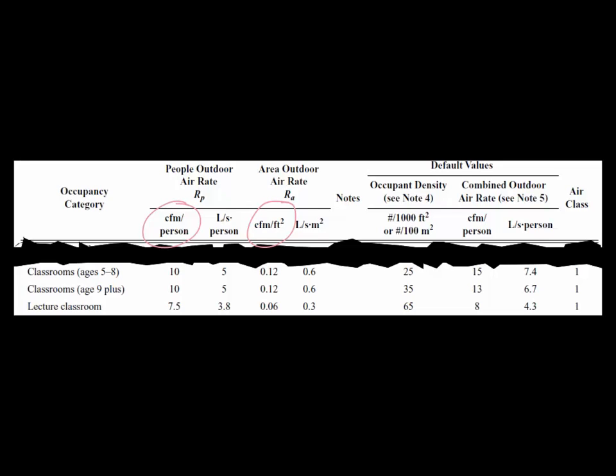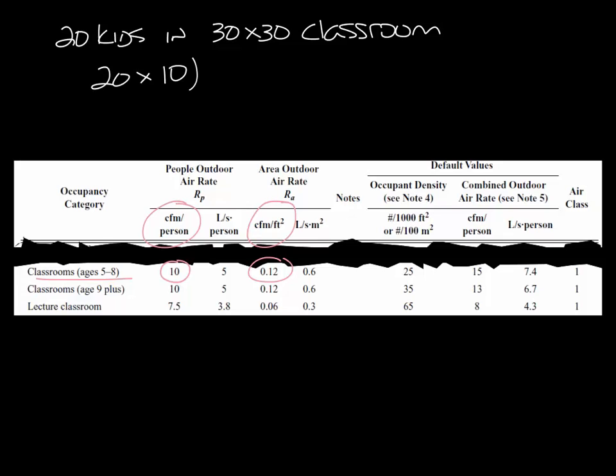And so it looks like this. You can see that a classroom for ages 5 to 8, you need 10 CFM per person and 0.12 CFM per square foot. So let's say we have 20 kids in a 30 by 30 classroom. You'd need 20 times 10 CFM per person plus 0.12 CFM per square foot times 30 by 30, the space size. And that equals 308 CFM of ventilation air in that space.